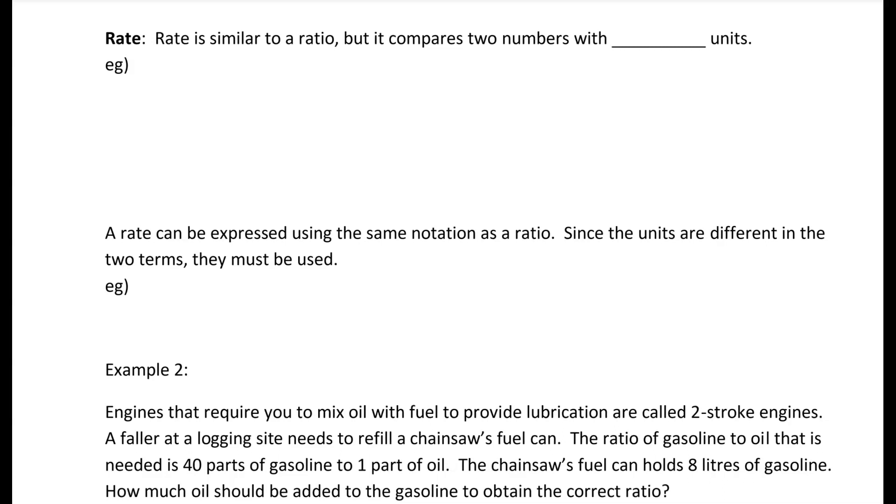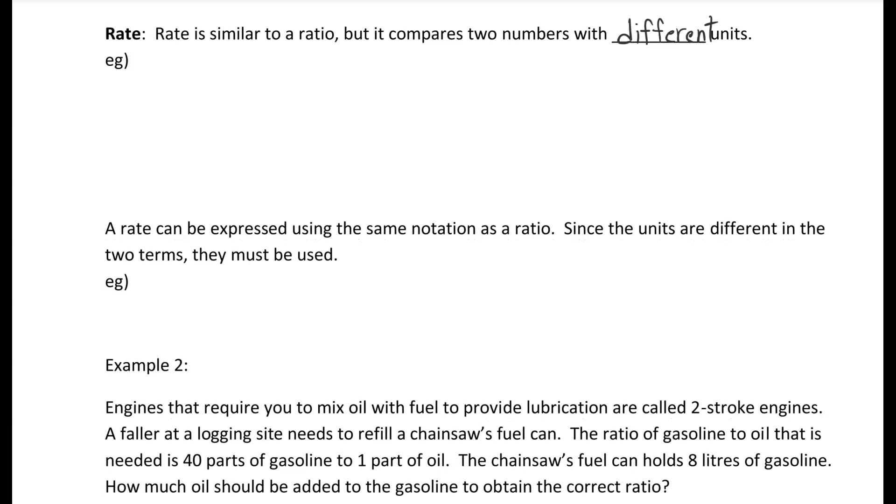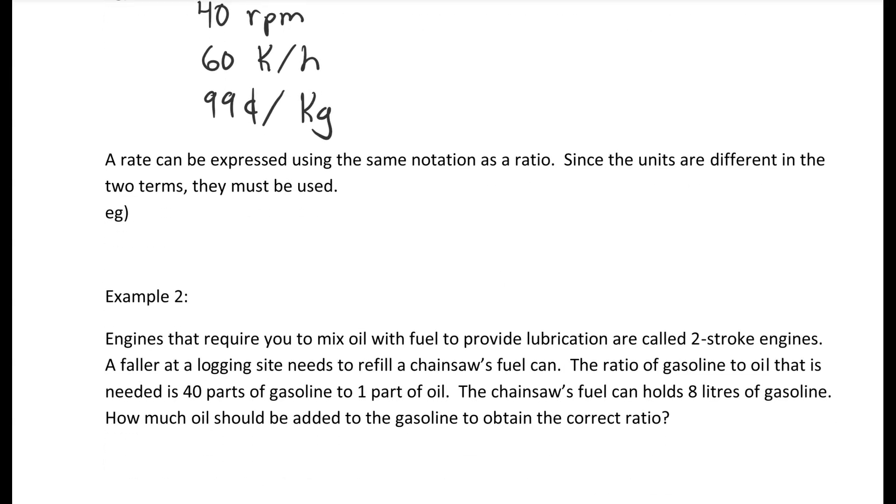The next term we're going to be looking at is rate. Rate is similar to ratio, but it compares two numbers with different units. Examples would be 40 revolutions per minute, 60 kilometers per hour, or 99 cents per kilogram. These all involve two different units. A rate can be expressed using the same notation as a ratio. Since the units are different in the two terms, they must be used.